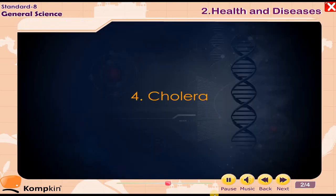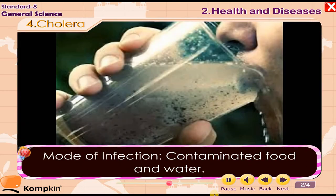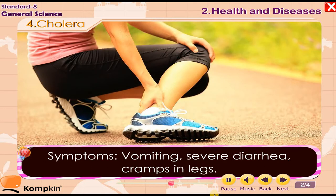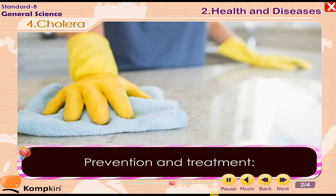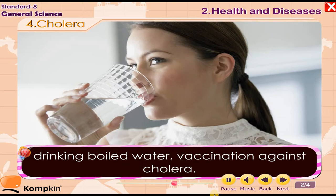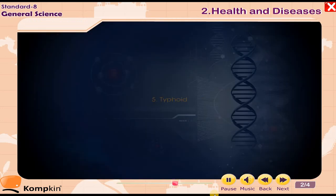4. Cholera. Cause: Vibrio cholerae bacterium. Mode of infection: Contaminated food and water. Symptoms: Vomiting, severe diarrhea, cramps in legs. Prevention and treatment: Following hygienic practices, avoiding open-place food, drinking boiled water, vaccination against cholera.